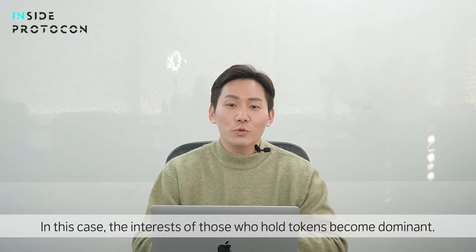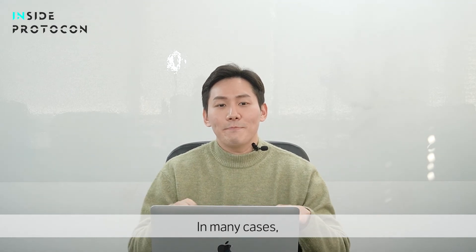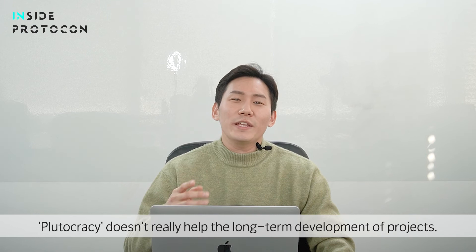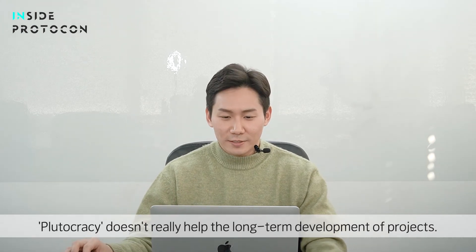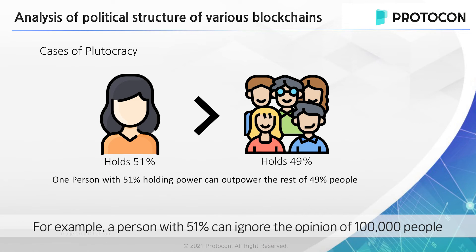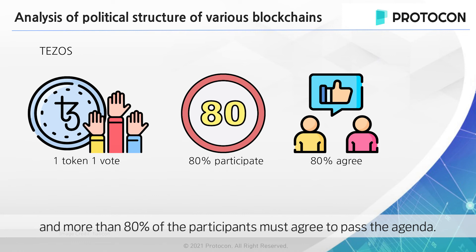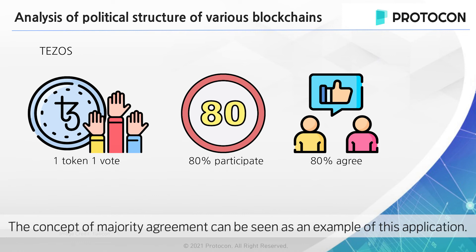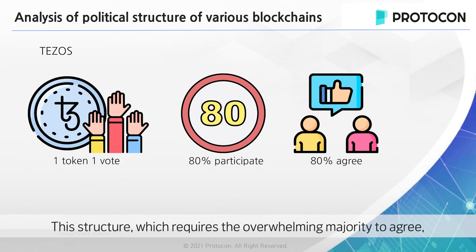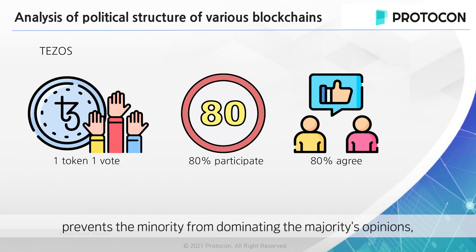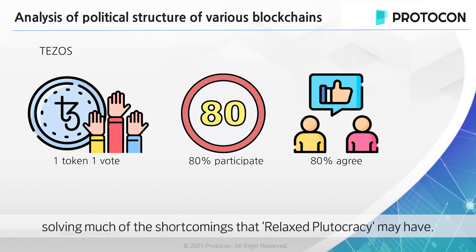In this case, the interests of those who hold tokens become dominant. In many cases, plutocracy doesn't really help the long-term development of projects. For example, a person within 51% can ignore the opinion of tens of thousands of people with a 49% proportion. Tezos unusually adopts one token, one vote, but more than 80% have to participate in the vote, and more than 80% of the participants must agree to pass the agenda. This concept of supermajority agreement prevents the minority from dominating the majority's opinion, solving much of the shortcomings that relaxed plutocracy may have.